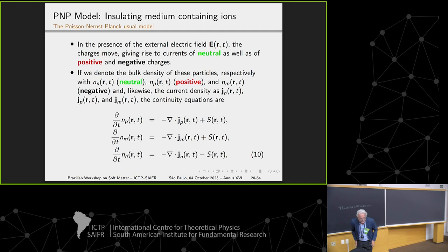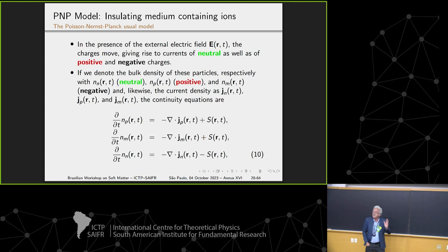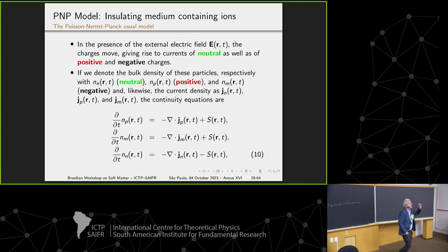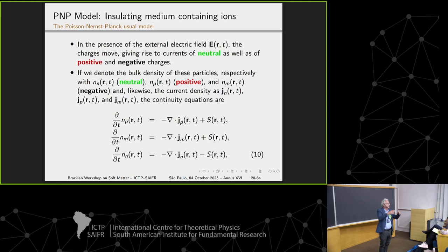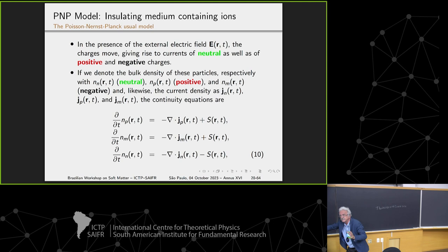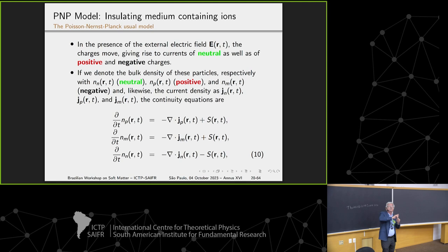To analyze impedance, we use the PNP model, Poisson-Nernst-Planck model. This model consists in considering two continuity equations for positive and negative ions. We imagine a soft-matter sample or a liquid crystal sample or an electrolyte cell in which charges are moving, positive and negative and neutral.